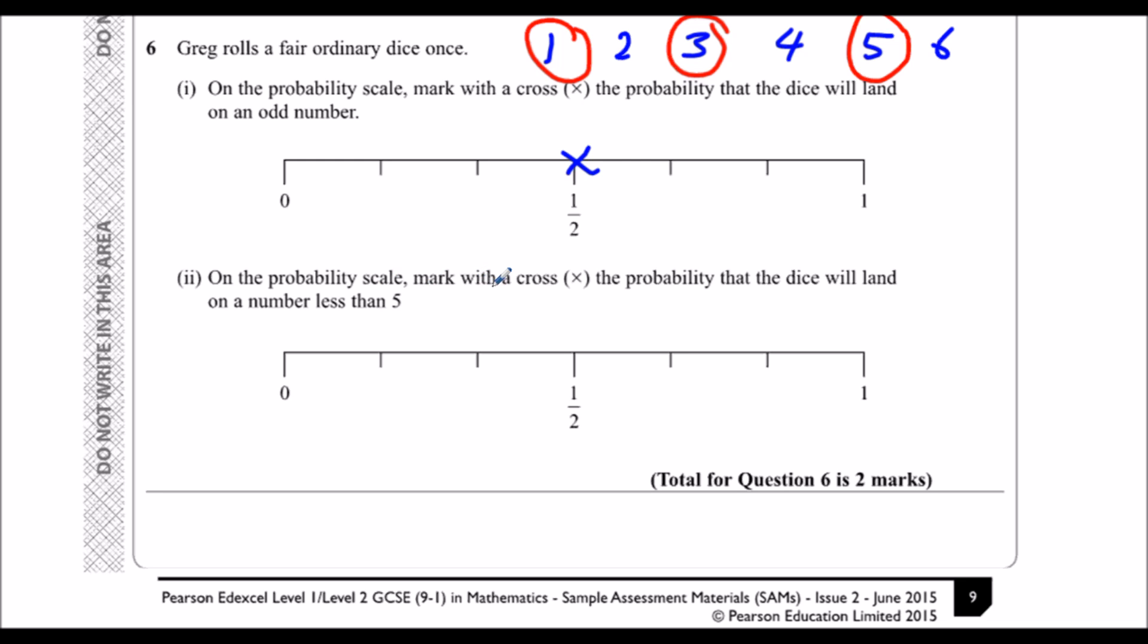On the probability scale mark with a cross, the dice will land on a number less than five.